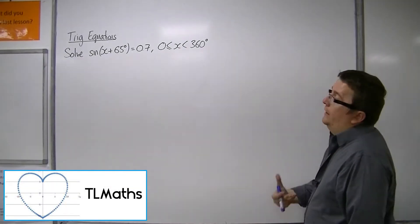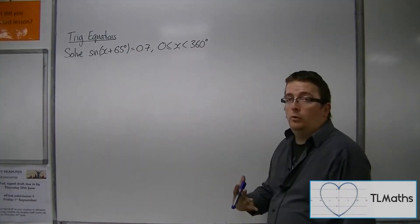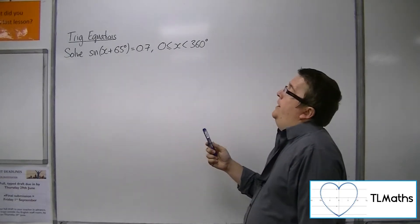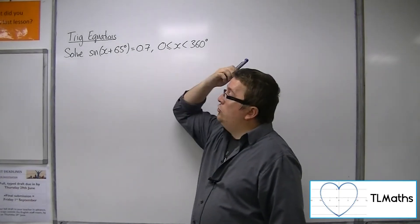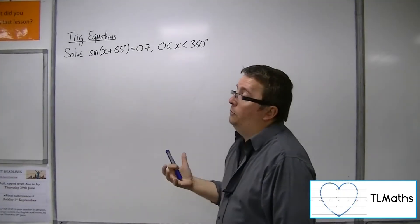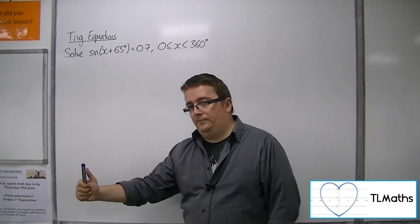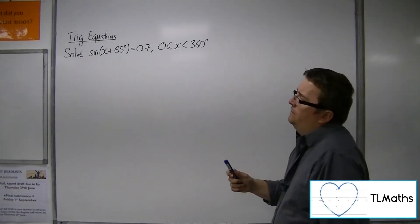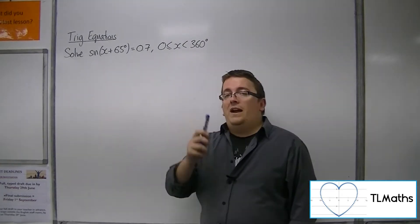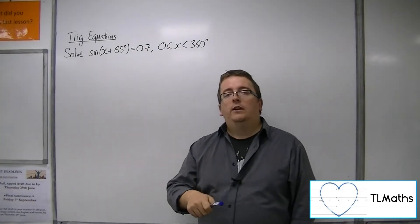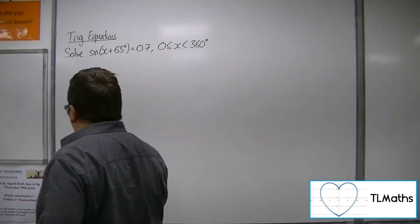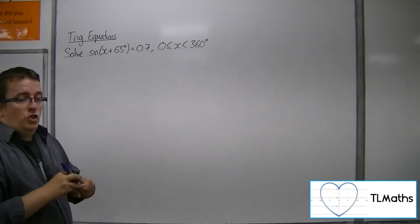In this video we want to solve sine of x plus 65 degrees equals 0.7, between 0 and 360. A few things to notice: first of all, this is a trigonometric curve that has been translated by the vector minus 65, 0 — so it's been shifted 65 degrees to the left. Secondly, because it is just a translation of sine, the period of the function hasn't changed. The period of sine of x plus 65 degrees is still 360, so we can use that information moving forward.